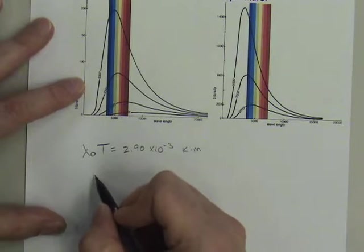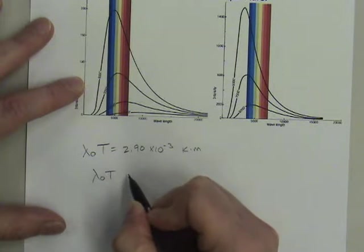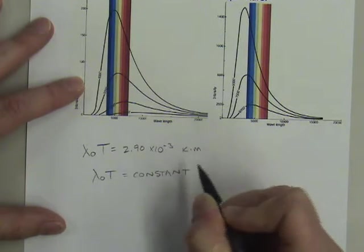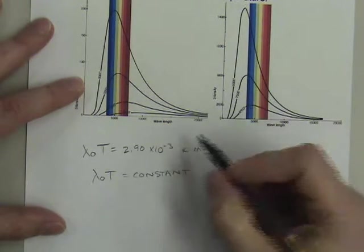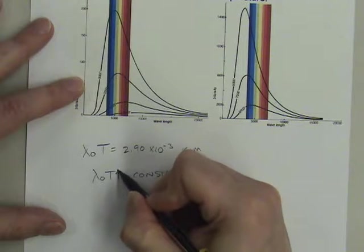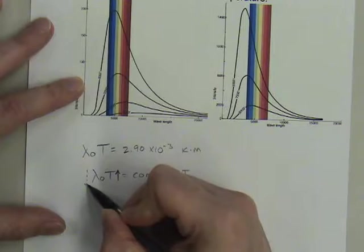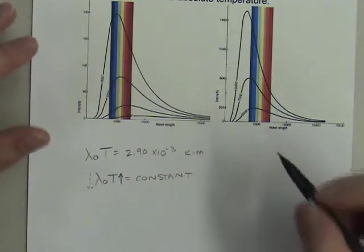Now, in a real simple sense, λ₀T is equal to a constant. So, therefore, for example, if I increase the temperature, what will I find? I will find that the wavelength decreases.